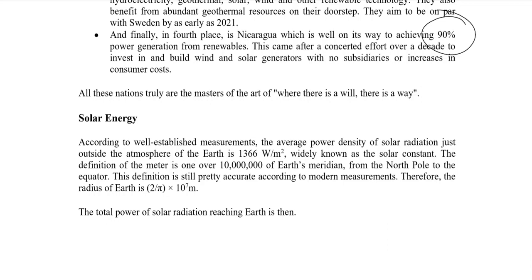One of the main contributors in renewable energy is solar energy. According to well-established measurements, the average power density of solar radiation just outside the Earth's atmosphere is around 1366 watts per square meter, known as the solar constant. This is the energy that is incident on the Earth's atmosphere.